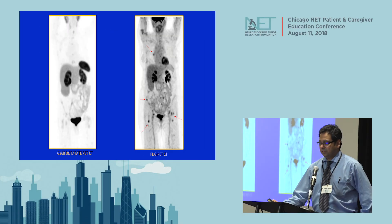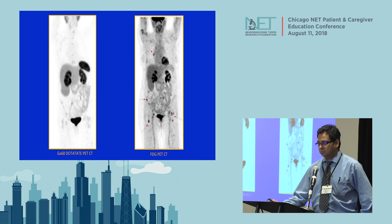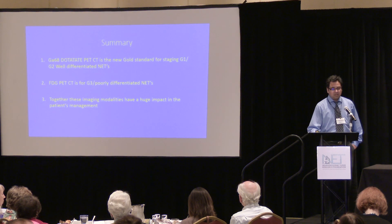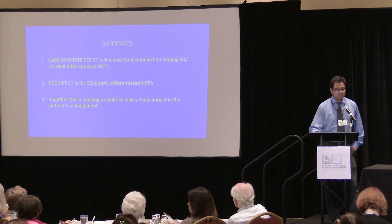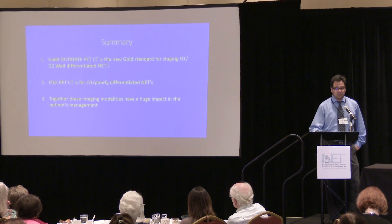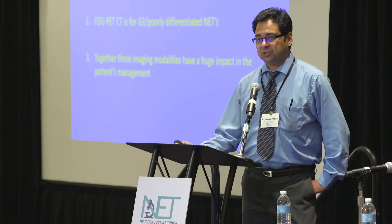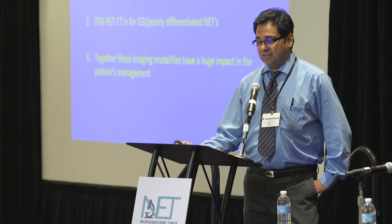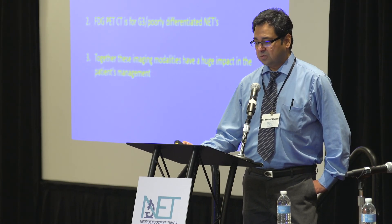An example shows the DOTATATE scan as nearly negative with some faint lesions, while FDG PET shows many osseous lesions not seen on DOTATATE — this is a grade 3, poorly-differentiated tumor. In summary: Gallium-68 DOTATATE PET is the new gold standard for staging G1 and G2 well-differentiated tumors; FDG PET-CT is for G3 or poorly-differentiated neuroendocrine tumors; and together, these imaging modalities have a huge impact on patient management.